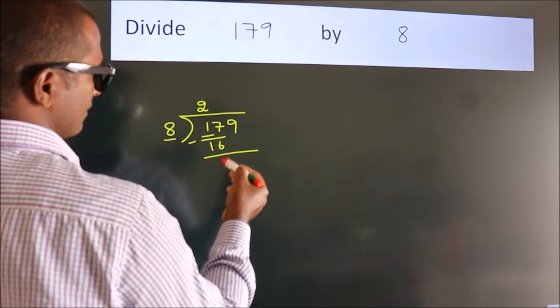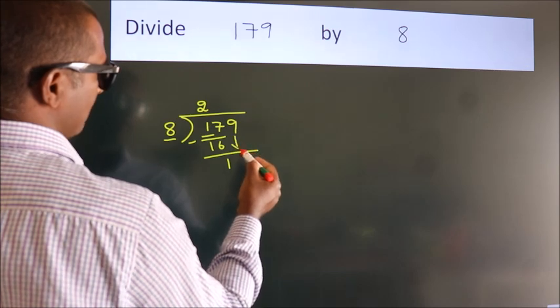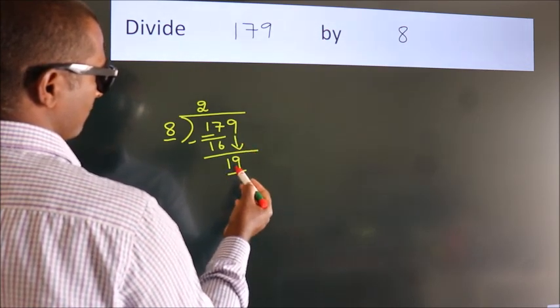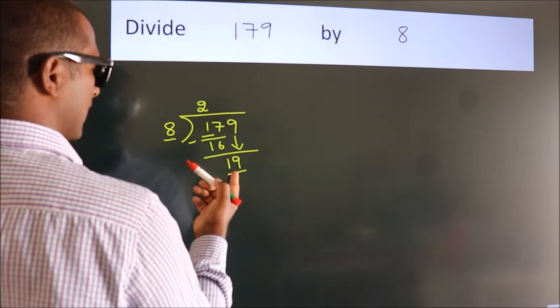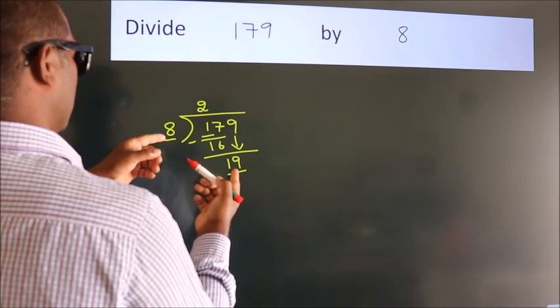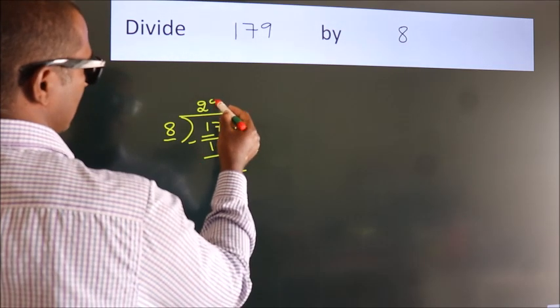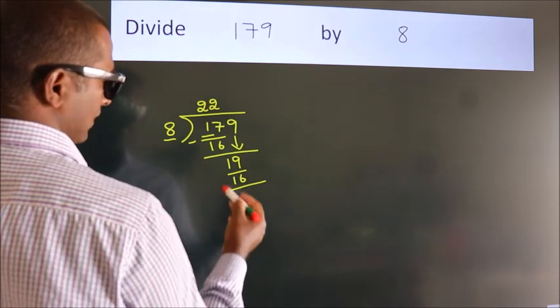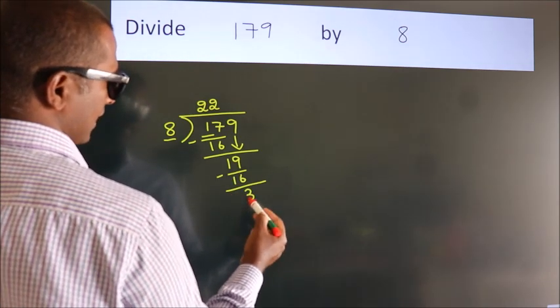After this, bring down the beside number. So 9 down, so 19. A number close to 19 in the 8 table is 8 twos, 16. Now we subtract, we get 3.